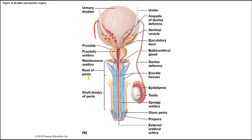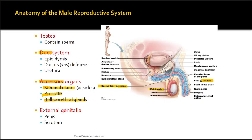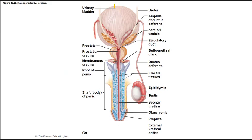This is another view for perspective. We have the urinary bladder, the urethra, and the prostate that surrounds the urethra. These are the two structures called the ureters, which come from the kidneys and bring urine into the bladder.